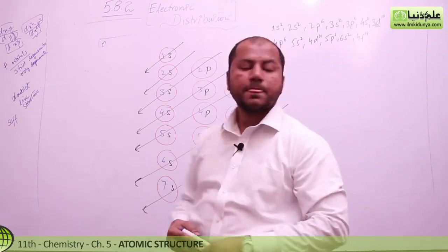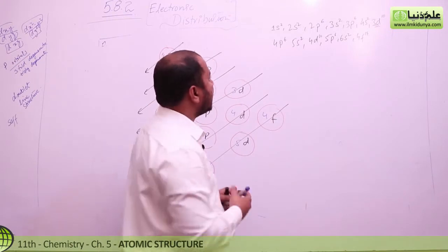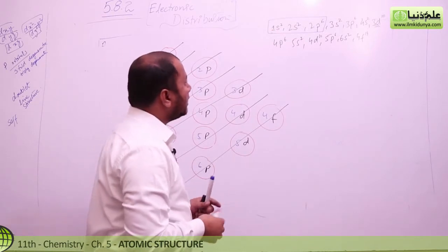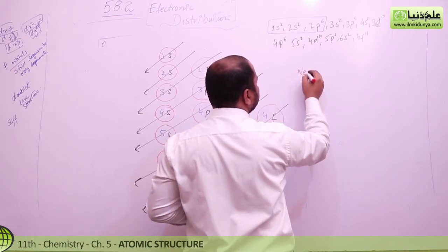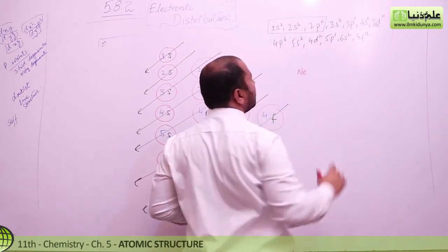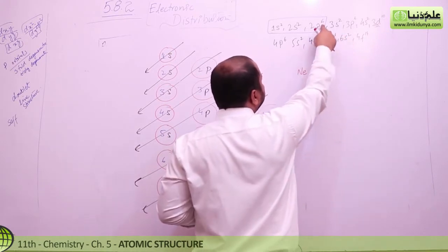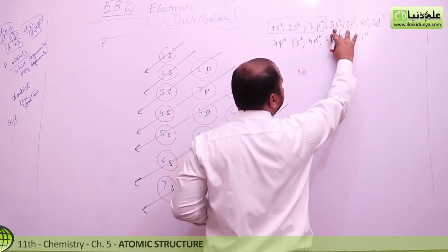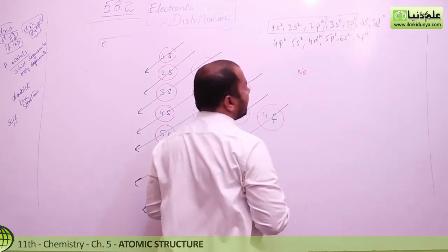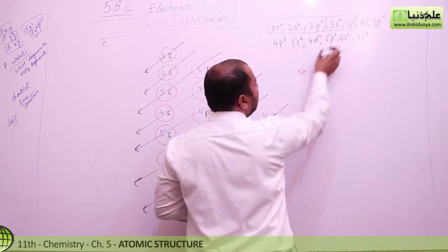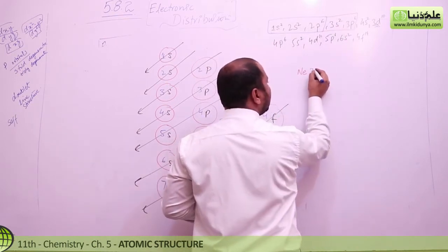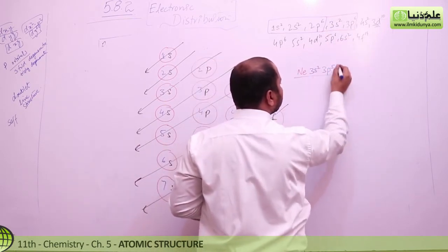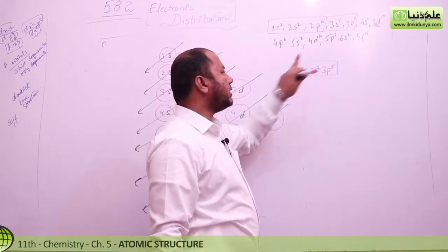You can see that if you want to write the configuration for neon, neon has 10 electrons, so its configuration ends at 2p6. For chlorine, write neon first — neon accounts for 10 electrons — and chlorine has 17 electrons total. So after neon, you add 3s2, which gives 12, and then 3p5, which gives 17. So chlorine's configuration is: [Ne] 3s2 3p5.